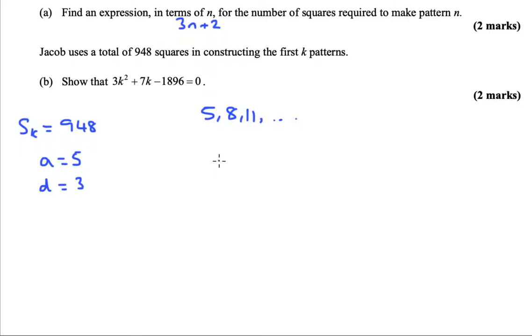So we can just use the rule for the sum of the first k terms. Sk is k over 2 times 2a, so 10, plus k minus 1 times d, which is 3, and we need that to equal 948.